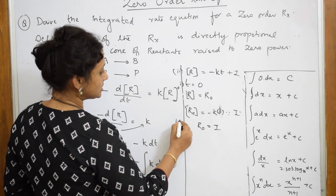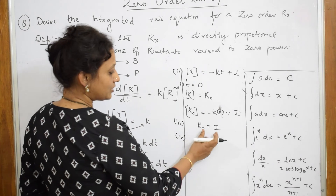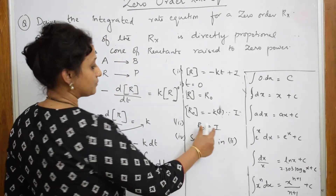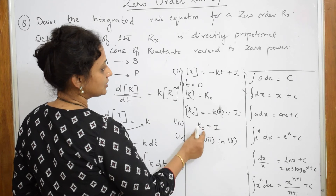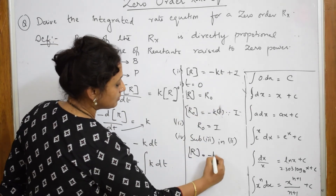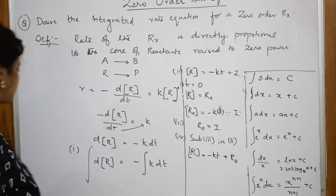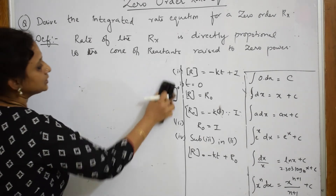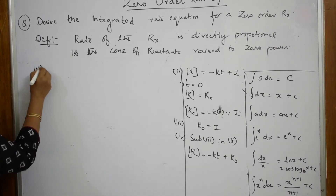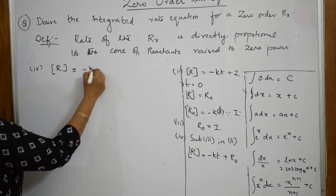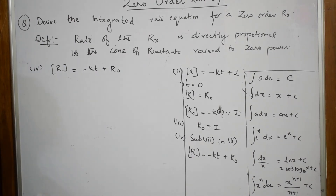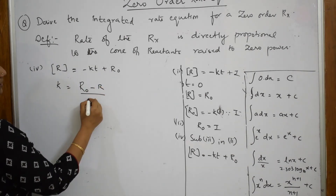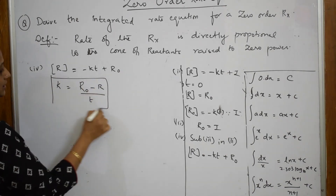Now substituting I = [R]₀ back into the equation, we get [R] = −kt + [R]₀. Rearranging to get k on one side: k = ([R]₀ − [R]) / t. This is your integrated rate equation for zero order.